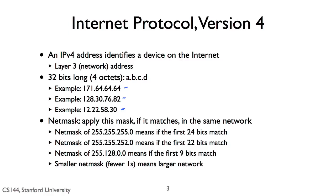In addition to an address, a device typically also has something called a net mask. A net mask tells you which IP addresses are local — on the same link, on the same network — and which require going through an IP router. For example, think of a laptop on a wireless network. In order to send a packet to another device in the same wireless network, you don't need to go through an IP router — you can just send the packet directly to the other device, since it's in the same wireless network.